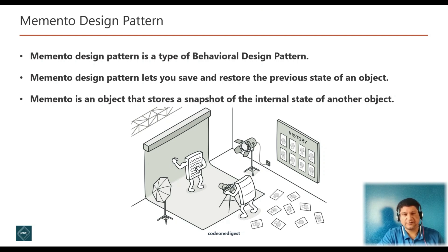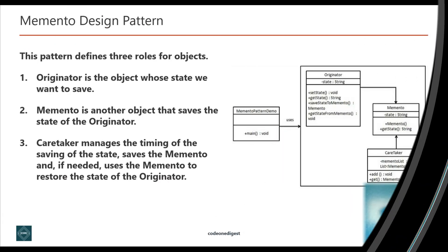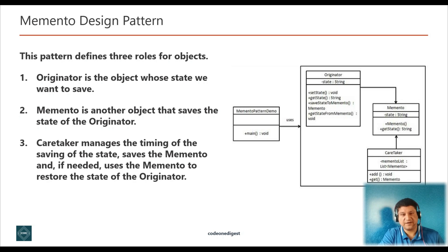For example, as your application is growing and progressing, you may want to save a checkpoint and restore it back to a previous state if anything goes wrong. This pattern defines three roles for objects.